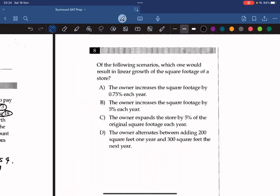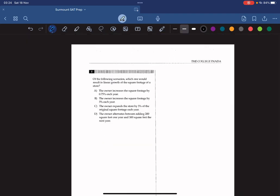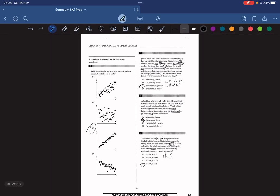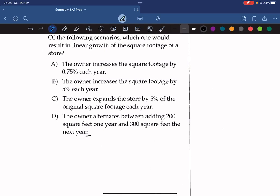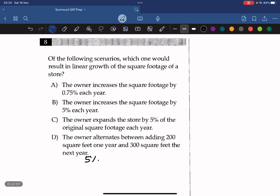Let's move on to the final question. Of the following scenarios, which one would result in linear growth of the square footage of a store? So 5% of the original square is constant, right? And it doesn't change, which would make it a linear growth. So the answer must be C.